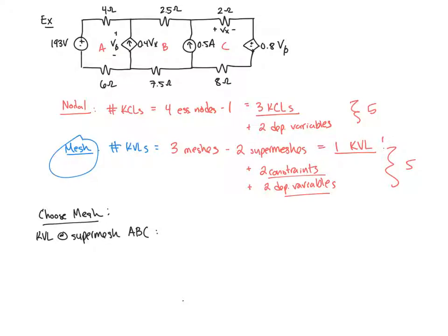Okay, so we're going to choose mesh and we're going to do a KVL of supermesh A, B, and C. So first thing we need to do is define our mesh currents. Define mesh A as IA, IB, and IC all going clockwise. So when I do my KVL, I'm going to start at the bottom left corner. First thing I do is traverse through 193 volts from negative to positive. So that's a plus 193 volt gain. I'd go through the 4 ohm resistor, so minus 4 ohms times the current, which is IA.